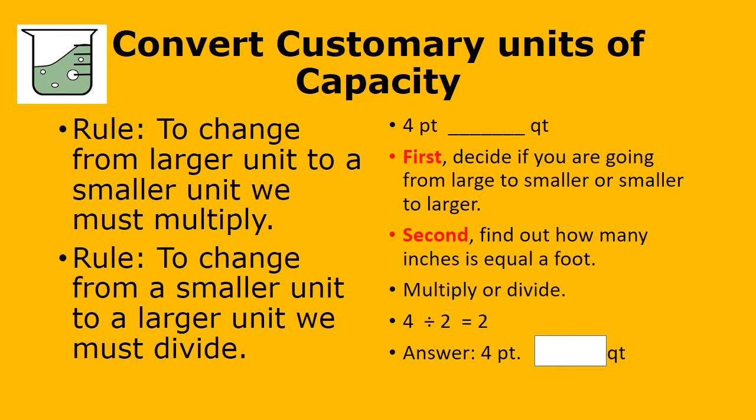Here's another one: 4 pints equals blank quarts. Pause the video and see if you can work this out. We have pints and quarts — quarts is larger than pints, so we're going from smaller to larger. We know that 2 pints equals 1 quart, so we divide: 2 into 4 goes 2 times. That will be our answer.